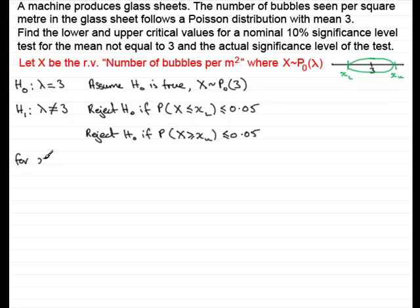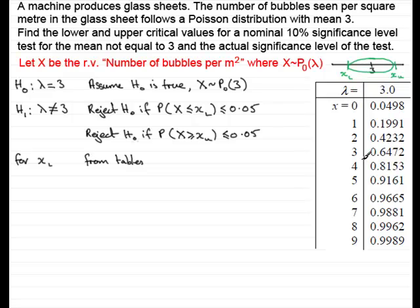To find the lower critical value, we look up cumulative Poisson probability tables. I have an extract here — these tables are generally found in the back of a statistics textbook. With mean 3, the column gives probabilities of being less than or equal to any observed value x. We want the lower critical value where P(X ≤ x) ≤ 0.05. When x equals 1 the value is greater than 0.05, but when x equals 0 the probability is less than 0.05, so the lower critical value is 0.